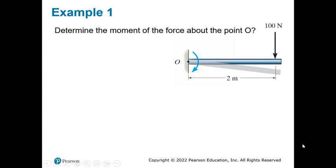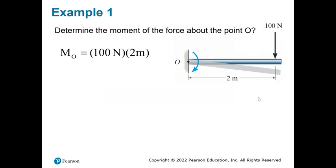Let's do a simple example: find the moment of the force about point O. We have a 100 Newton force and need the perpendicular distance — the distance from O to the line of action — which is two meters. So the moment is simply 100 times 2, giving 200 Newton meters. Don't forget the units — they are very important.